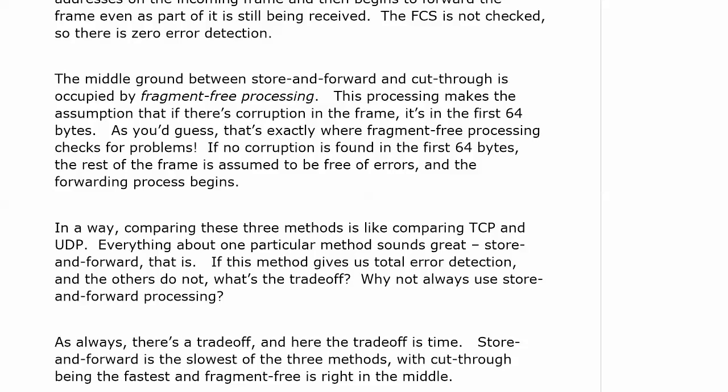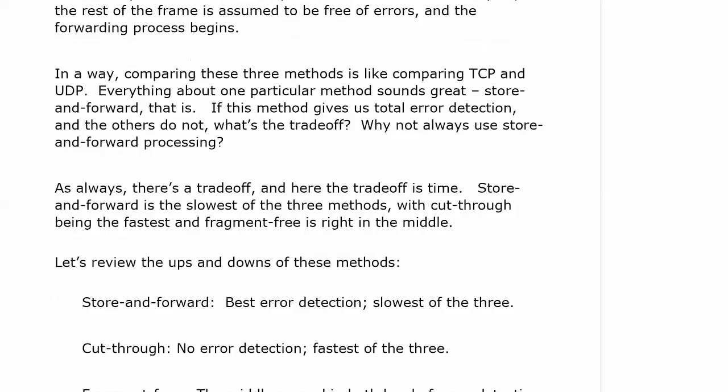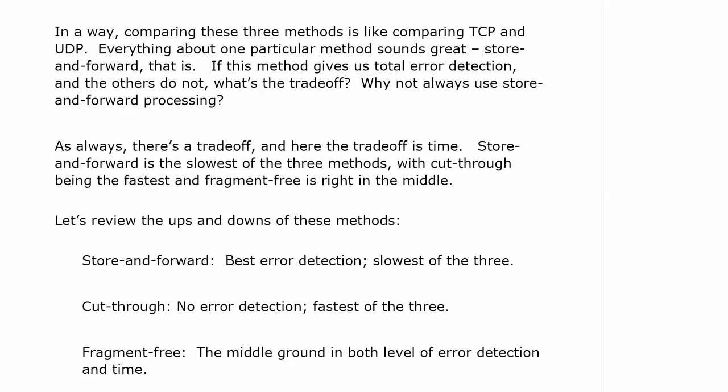Store and forward is the slowest of the three methods — not horribly slow, just technically slower than cut-through and fragment-free. Cut-through is the fastest of the three because we're taking the frame in one port and sending it right out the other without checking for any problems. To summarize: store and forward has the best error detection but is the slowest; cut-through has no error detection and is the fastest; and fragment-free is the middle ground in both level of error detection and processing time.